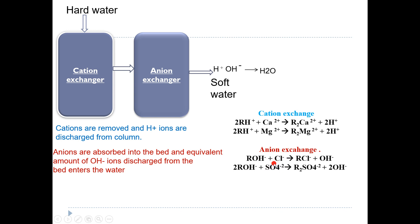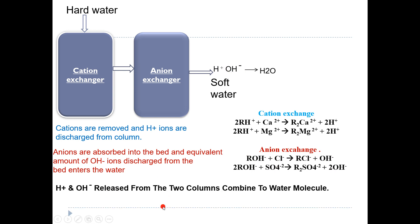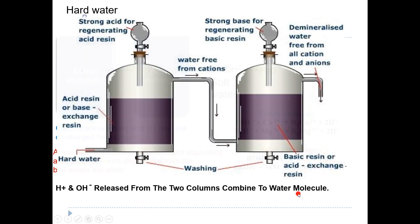Chloride, sulfates, and nitrates are all replaced — the OH– ion from the resin is exchanged by these anions from the water. The water now contains H+ and OH– ions, which together form water. So H+ is released from the cation exchanger and OH– is released from the anion exchanger, and together they form pure water molecules.